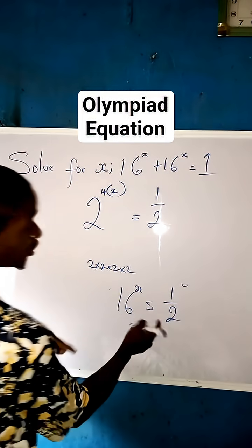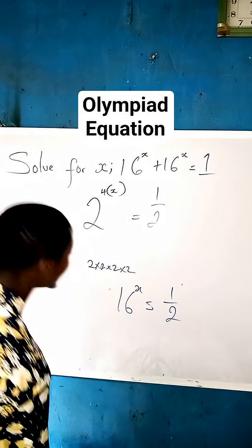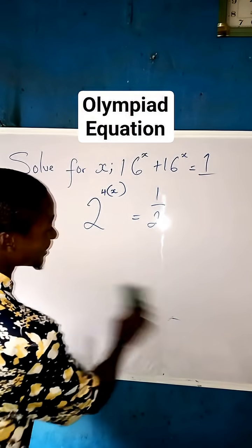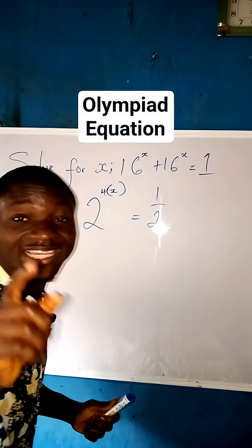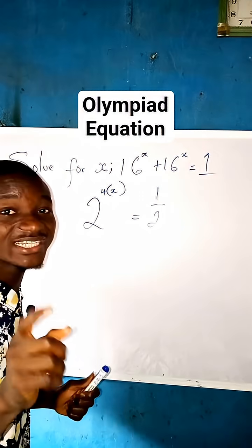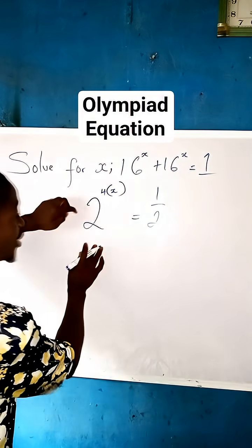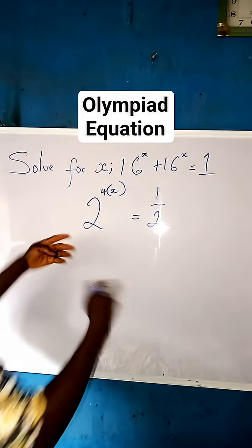2 × 2 is 4, 4 × 2 is 8, 8 × 2 is 16, then equal to this 1/2 is also here. So what do we do next is to use the law. But please be liking, be liking this video, be sharing it, be following if you ever follow.